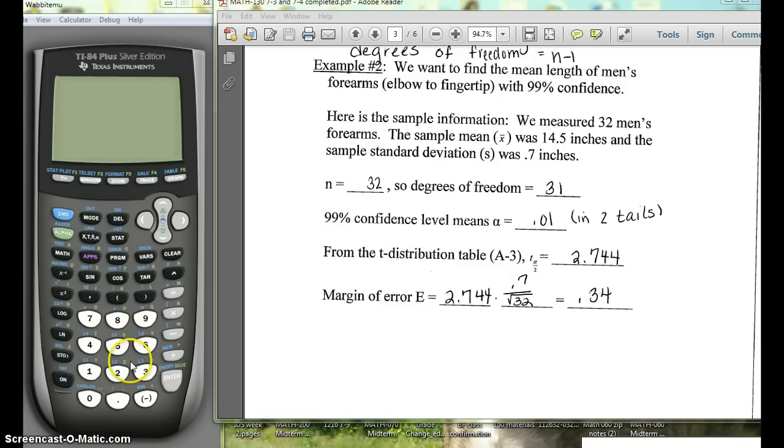Here's the example we'll go with. We want to find the mean length of men's forearms with 99% confidence. We've measured 32 men's forearms, the sample mean was 14.5 inches, and the sample standard deviation is 0.7 inches. We don't know the standard deviation of all men's forearms.